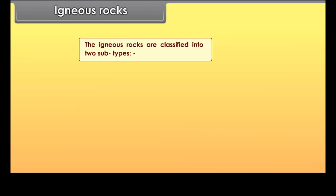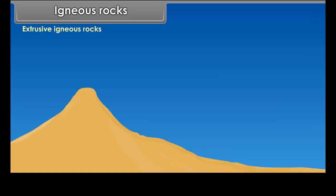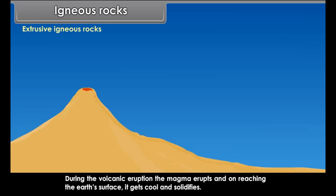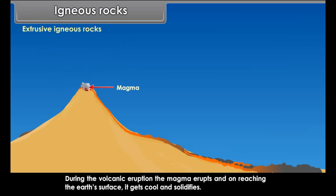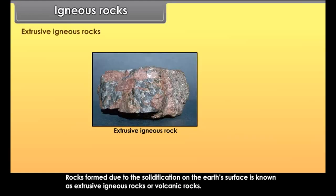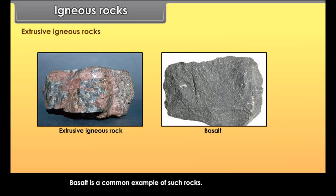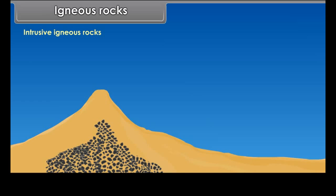Types of rock. On the basis of their origin, rocks are generally classified into three categories: igneous rocks, sedimentary rocks, and metamorphic rocks. Igneous rocks are formed when a hot molten material with very high temperature and pressure deep below the lithosphere cools and solidifies. The molten rock material is called magma. Igneous rocks are classified into two subtypes: extrusive igneous rocks and intrusive igneous rocks.